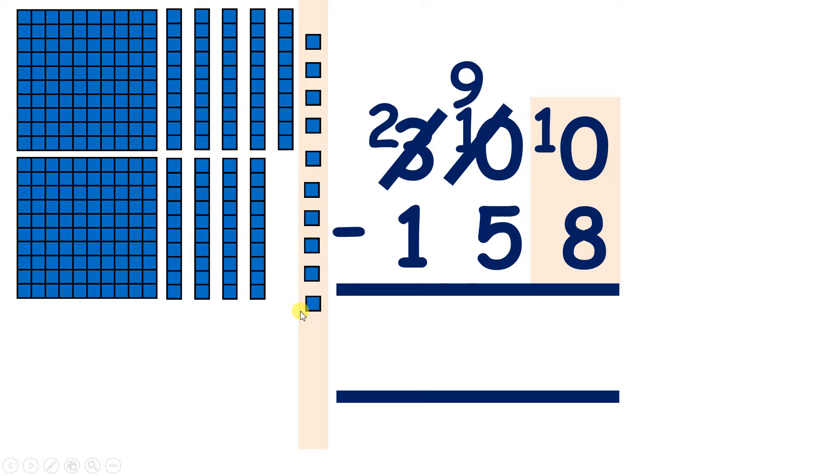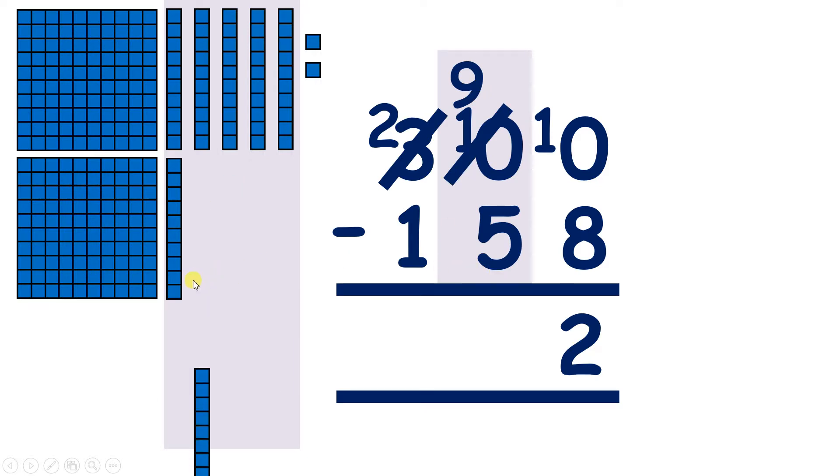So now we can subtract 8 to leave us with 2 units. And now we can move on to our tens. So although we started with 0 tens, we now have 9 tens. So we can take away 5, and that leaves us with 4 tens.